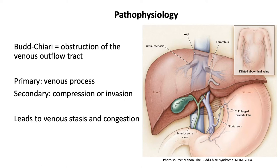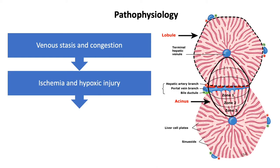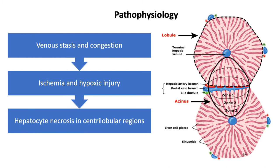All of this obstruction of the venous outflow tract ultimately leads to venous stasis and congestion within the liver. On a microscale, this venous stasis and congestion leads to ischemia and hypoxic injury to the liver cells. Ischemia causes free radical release, further contributing to hypoxic injury, and you ultimately get hepatic necrosis in the central lobular regions furthest from the blood supply. If this process continues, you'll eventually get central lobular fibrosis, then nodular regenerative hyperplasia, and ultimately cirrhosis.